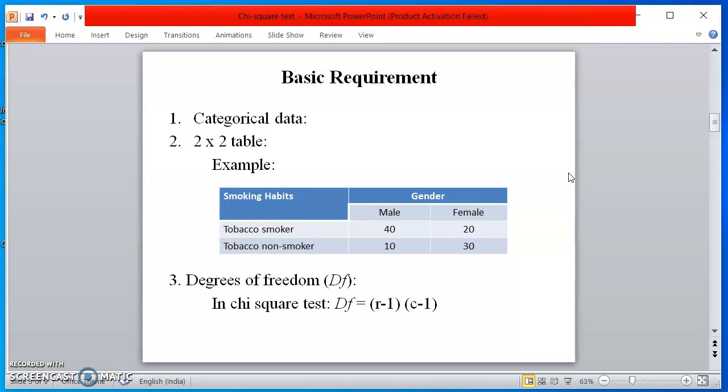Another important requirement is table formation. Generally, chi-square table is a 2x2 table. But sometimes, table size may be extended as per need of the study.